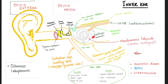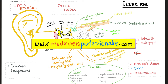Hearing is by the cochlea and the famous organ of Corti. Balance is by the three semicircular canals, the utricle and saccule. Cranial nerve 8 is a sensory nerve we call vestibulocochlear — balance and hearing — or statoacoustic. If you want to download my handwritten notes, go to medicosisperfectionatis.com. I help you learn, understand, and pass exams.